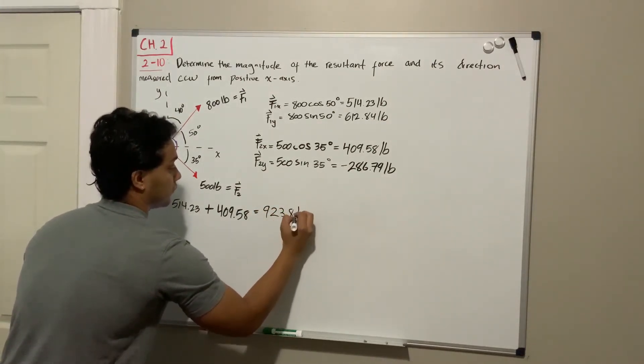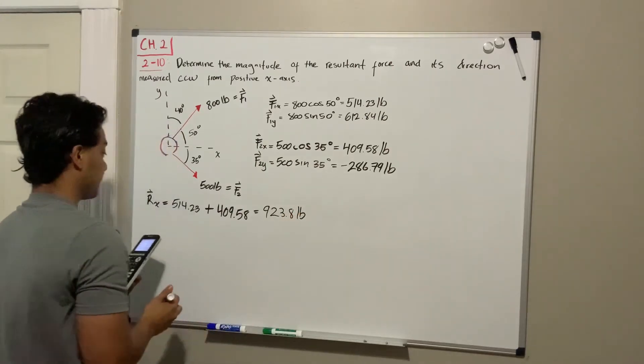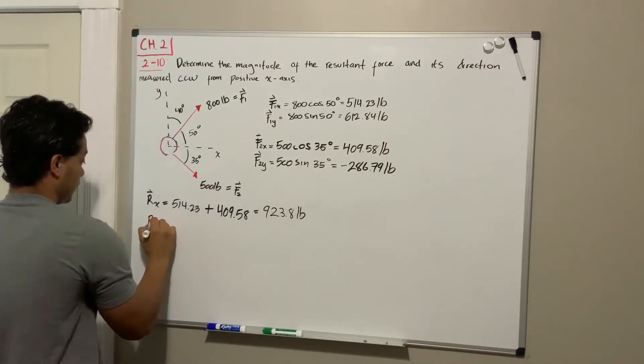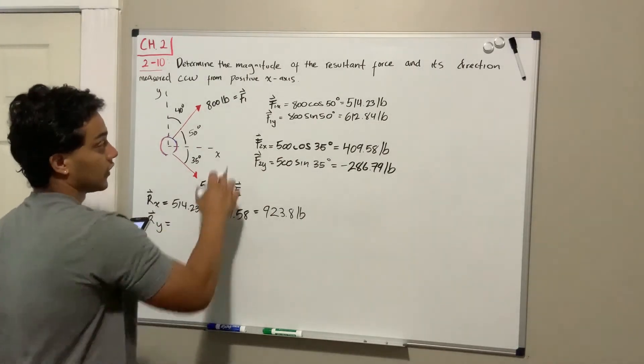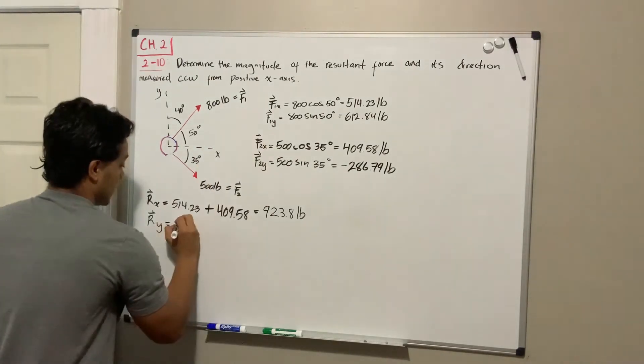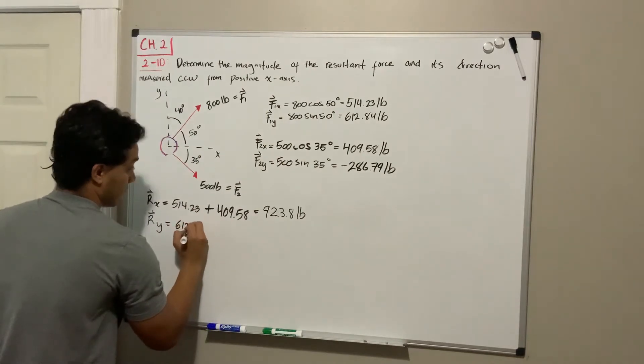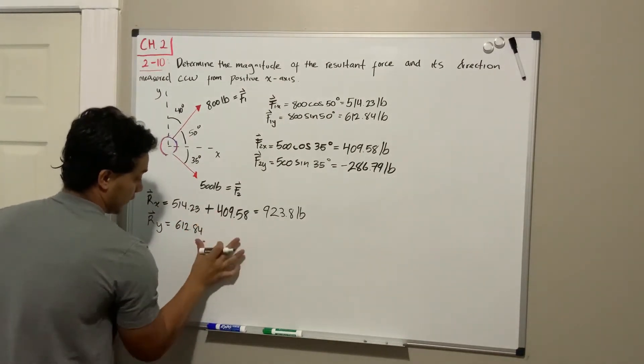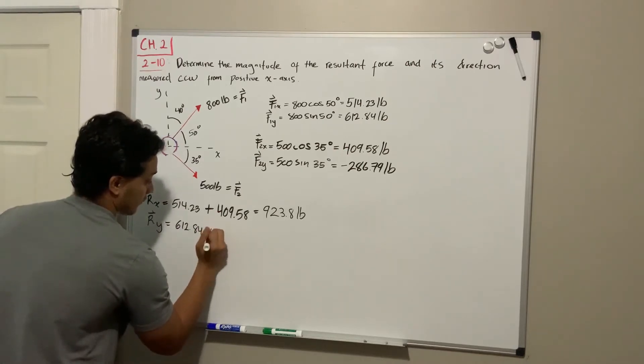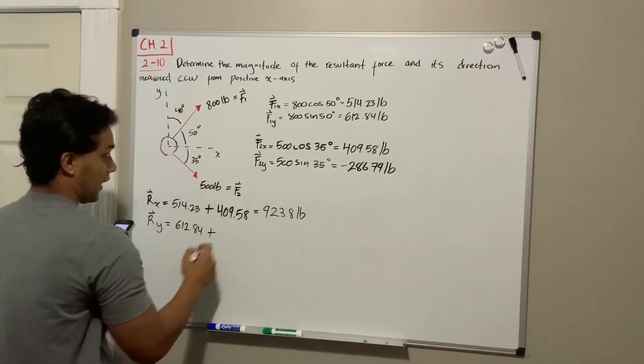For R in the y direction, it's going to be F1y which is 612.84 pounds. I'm gonna leave the units for the end, plus a negative 286.79 for the y of force two.